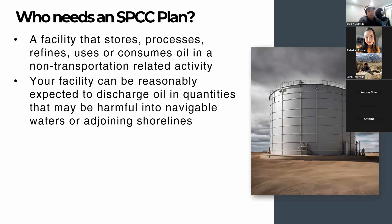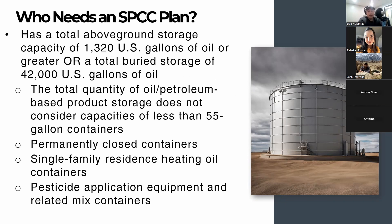Who needs an SPCC plan? Generally, it's a facility that stores, processes, refines, uses, or consumes oil in a non-transportation-related activity, where the facility can reasonably be expected to discharge oil in quantities that may be harmful into navigable waters or adjoining shorelines. If you have a total above-ground storage capacity of 1,320 U.S. gallons or more of an oil-based product on site, or a total buried storage of 42,000 U.S. gallons of oil on site, then you need an SPCC plan. The SPCC regulations do not consider anything less than 55 gallons — the total only considers containers of 55 gallons or greater.